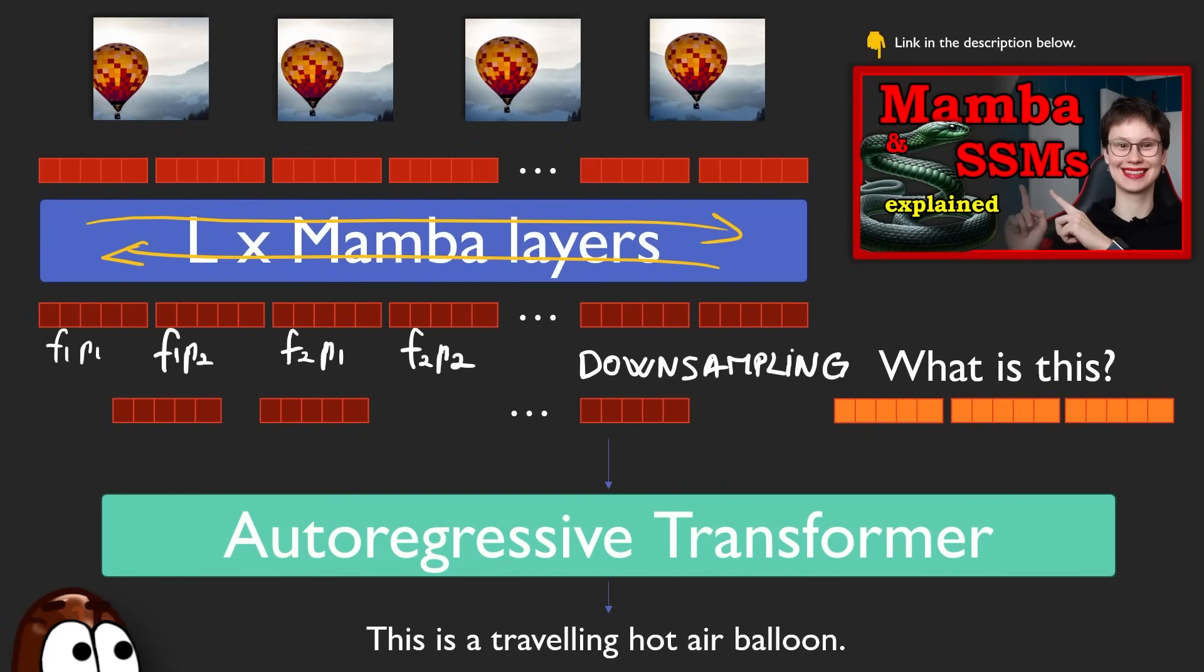Once that temporal context is baked into the tokens, Storm does temporal downsampling. It averages every four vectors corresponding to the same patch at four different frames together. This reduces the sequence length going into the LLM by a factor of four. At inference time, it goes even further by only keeping every second frame that came out from the Mamba layers. With this, we have a total sequence length reduction of a factor of eight.